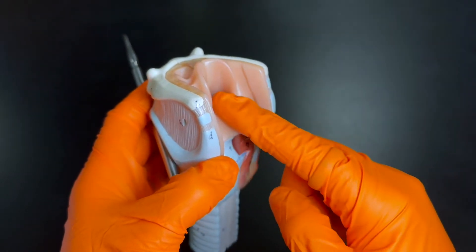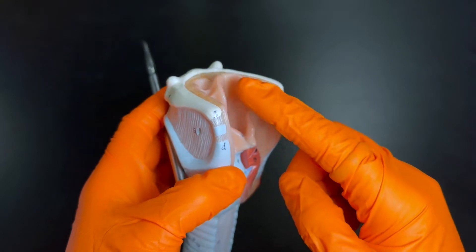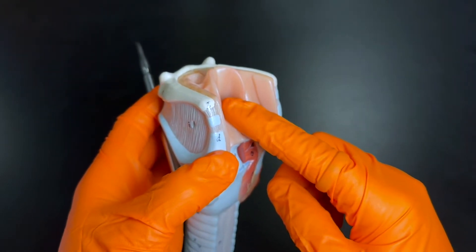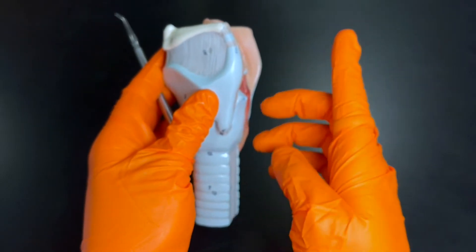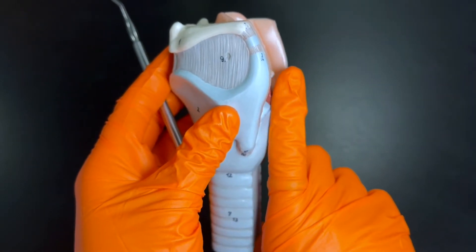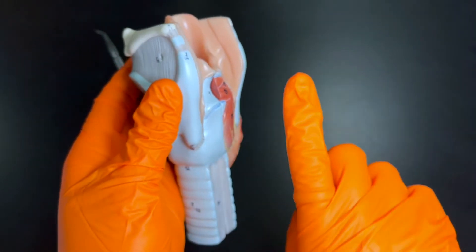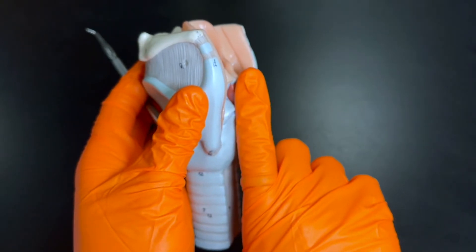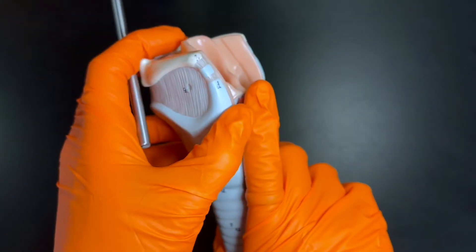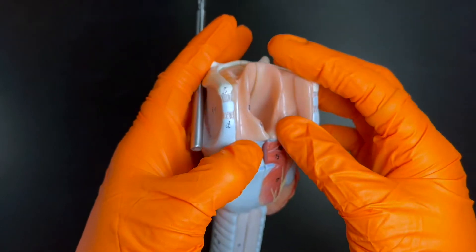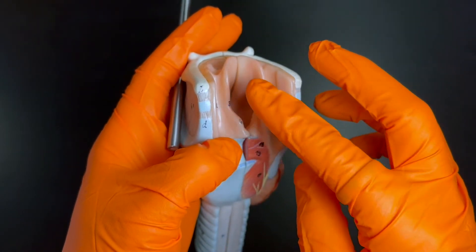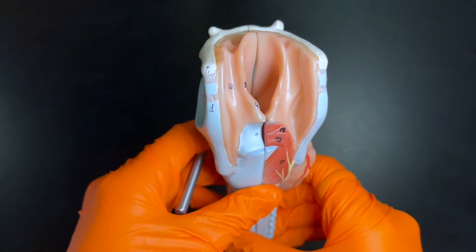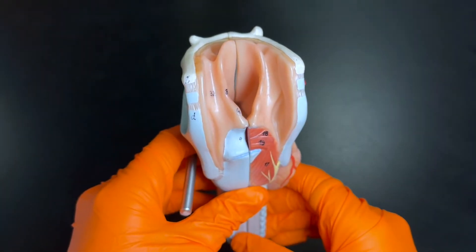Basically, the epiglottis is going to be this flap that covers the opening to the windpipe or the trachea, the airway right here, when we are swallowing. So the esophagus, that tube, is going to lie posterior to the trachea - it'll be right here. Anytime we're swallowing or eating something, the epiglottis can basically move and help keep food or drinks from going down the windpipe.